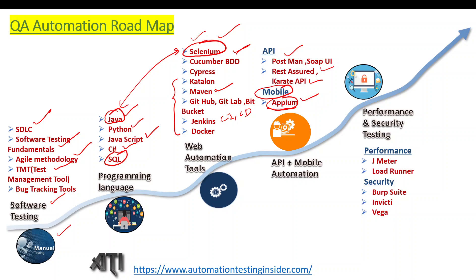Next is performance and security testing, which is also very important. For performance testing, you can start with Apache JMeter and we also have LoadRunner. I will be covering JMeter soon on my YouTube channel. For security testing, we have Burp Suite as the most important tool, Invicti, and Vega. I'll cover security testing on my channel as well, but first I'll create videos on API testing since many people are requesting it.